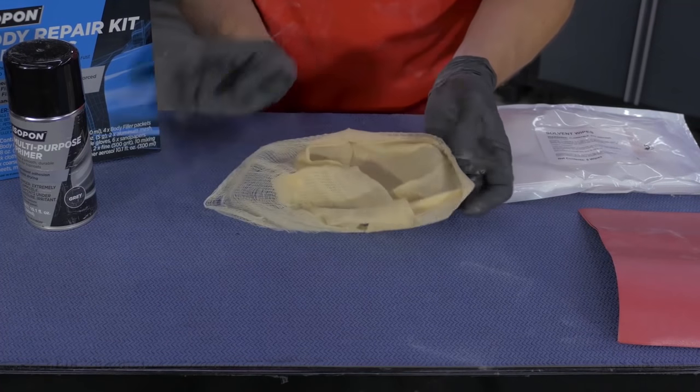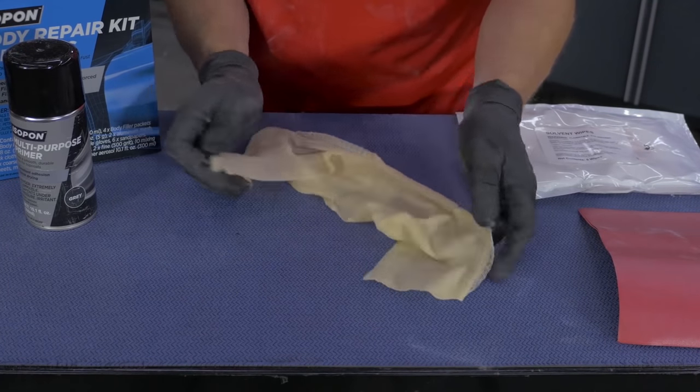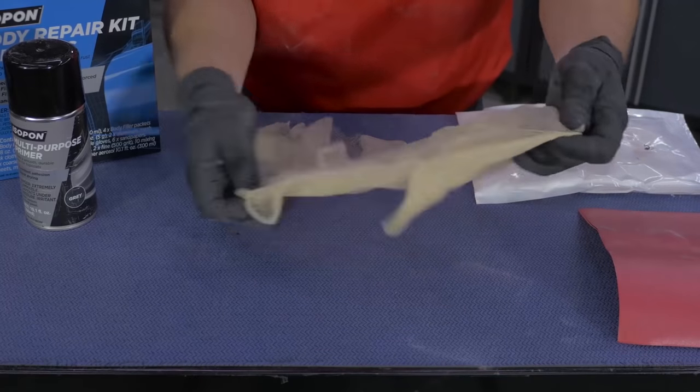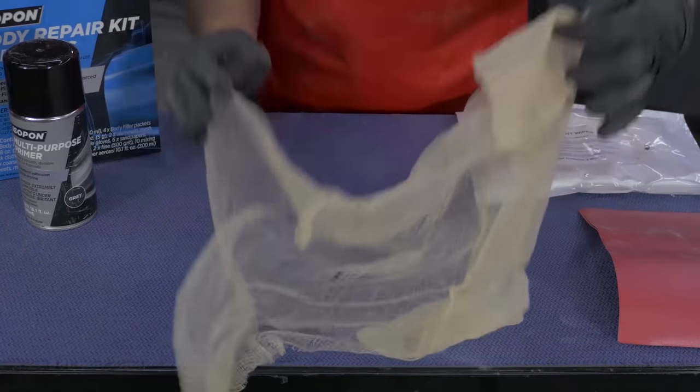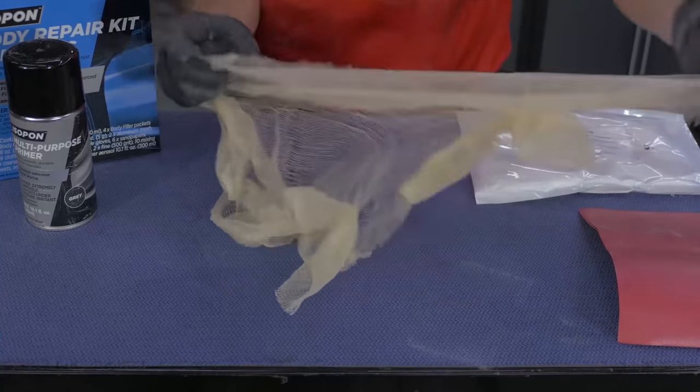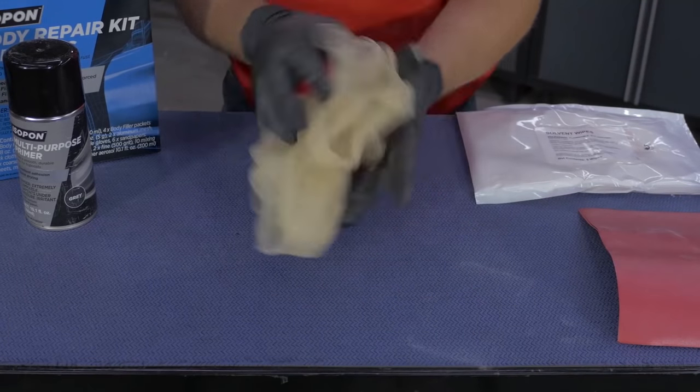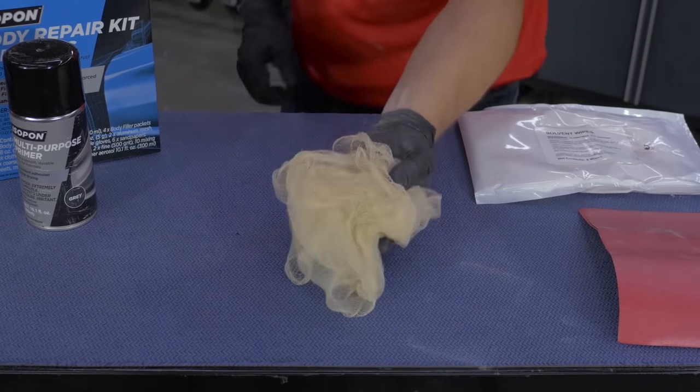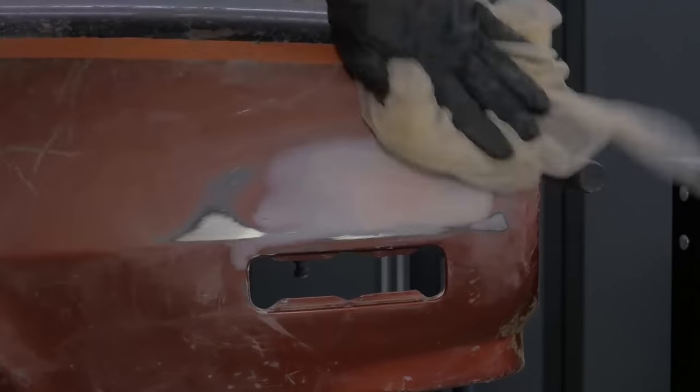Proper use of a tack cloth involves unfolding it, allowing the air to penetrate into the mesh of the fabric and balling it up gently. This makes sure none of the residue from the tack cloth ends up in your work. With your surface properly tacked off, you're ready for primer.